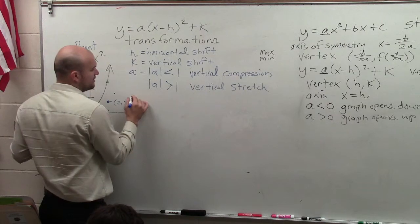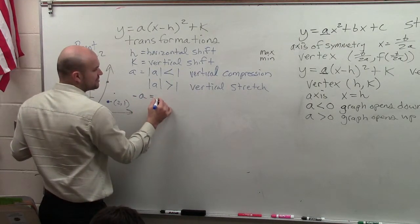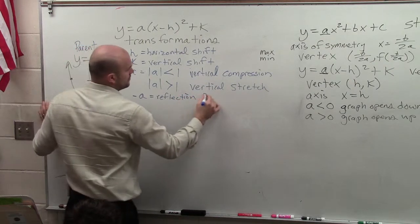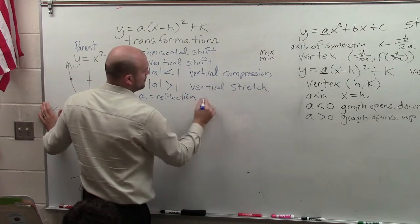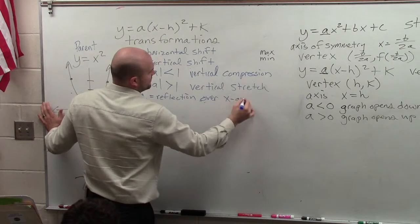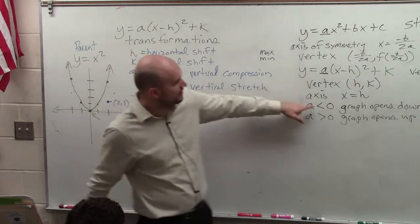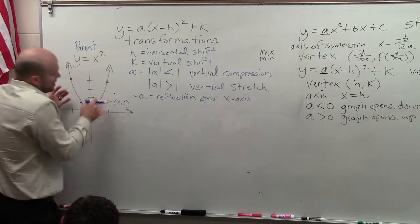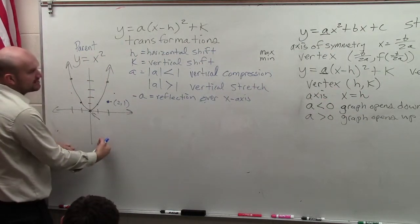And also, remember we talked about when you have negative a, that's going to be a reflection over the x-axis. As we mentioned over here, when a is less than 0, it opens down. Basically what you're doing is you're taking the parent graph and reflecting it over the x-axis.